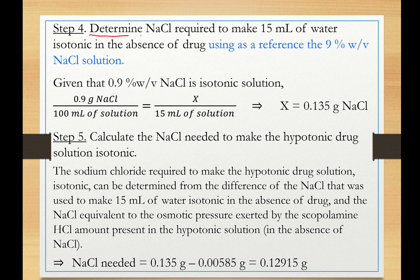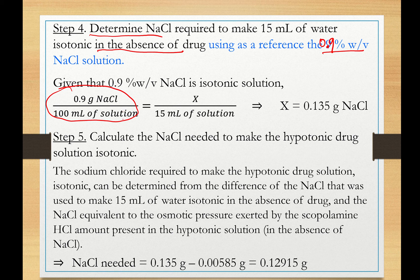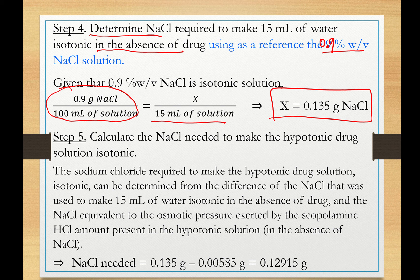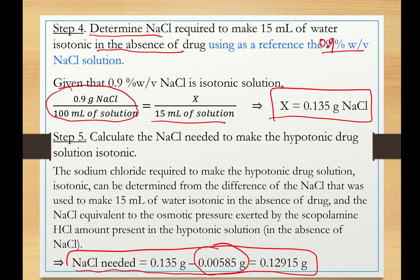Next, we determine the sodium chloride needed to make 15 mL of water in the absence of drug isotonic. Using 0.9% w/v as the reference, 0.9 grams per 100 mL for 15 mL gives us 0.135 grams. We subtract the drug's osmotic equivalent from this: 0.135 minus 0.00585 grams to get the sodium chloride needed to make the drug solution isotonic.